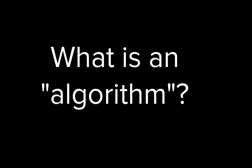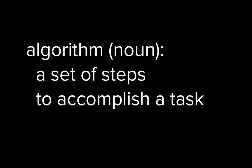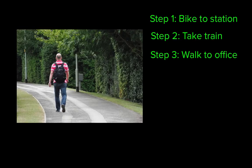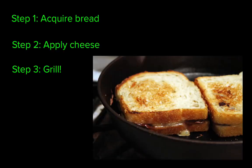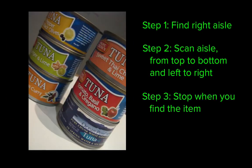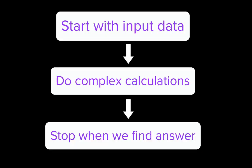What is an algorithm? One definition might be a set of steps to accomplish a task. You might have an algorithm for getting from home to school, for making a grilled cheese sandwich, or for finding what you're looking for in the grocery store. In computer science, an algorithm is a set of steps for a computer program to accomplish a task.